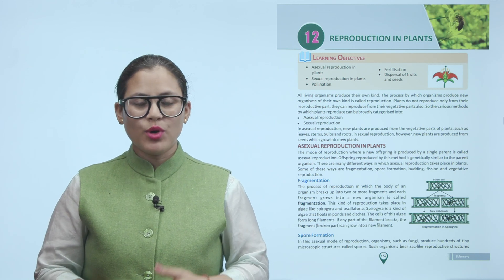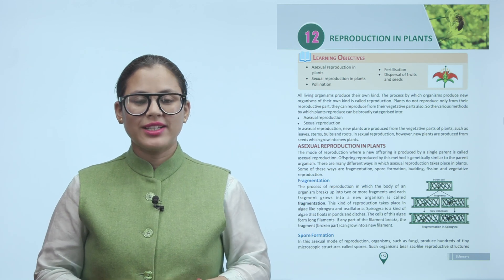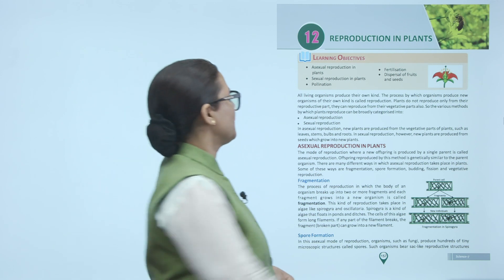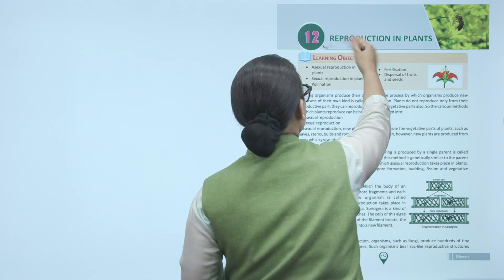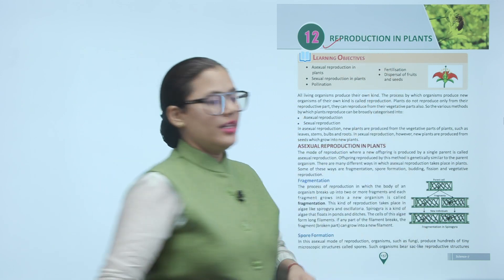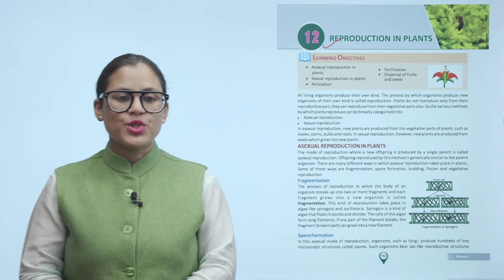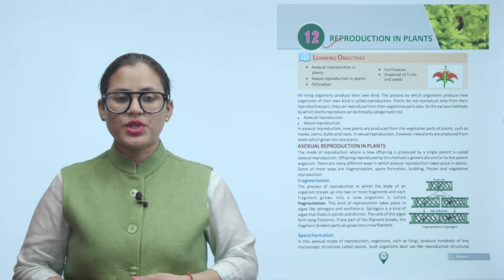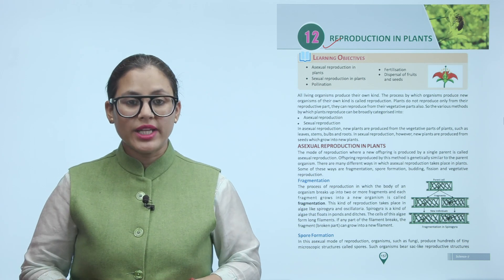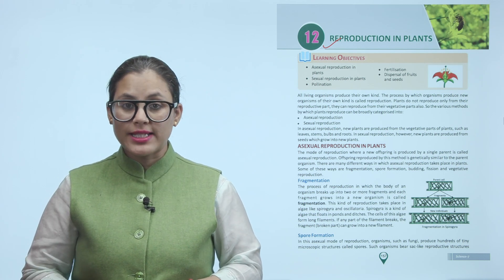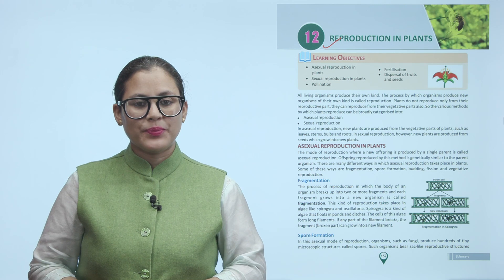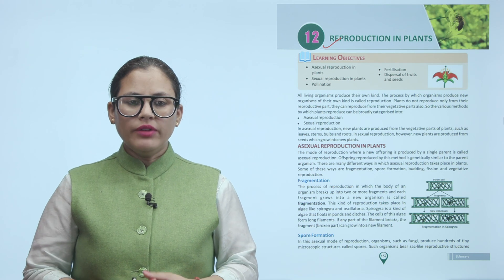Hello children, hope you all are doing good. Let's start today's chapter: Reproduction in Plants. Learning objectives include asexual reproduction in plants, sexual reproduction in plants, pollination, fertilization, and dispersal of fruits and seeds.